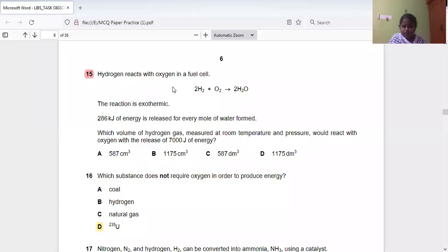Hi students, here is a question from Stoichiometry. Hydrogen reacts with oxygen in a fuel cell. When hydrogen reacts with oxygen in a fuel cell, the product is water.